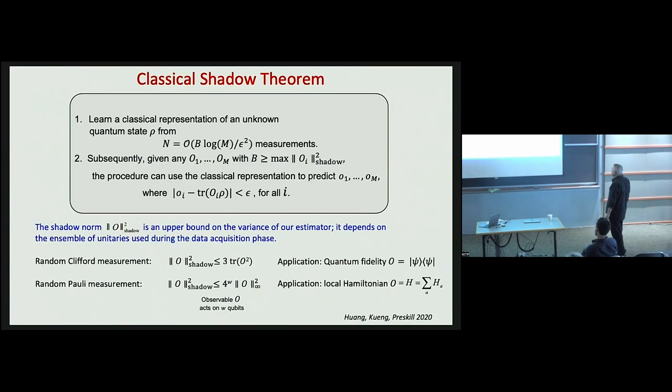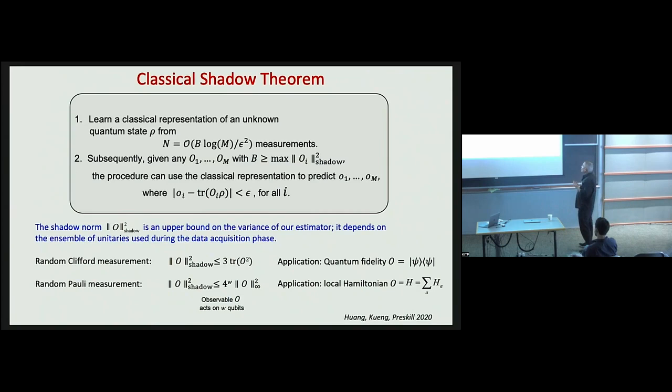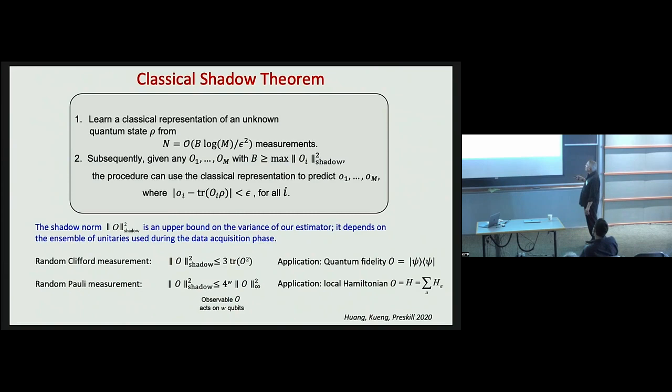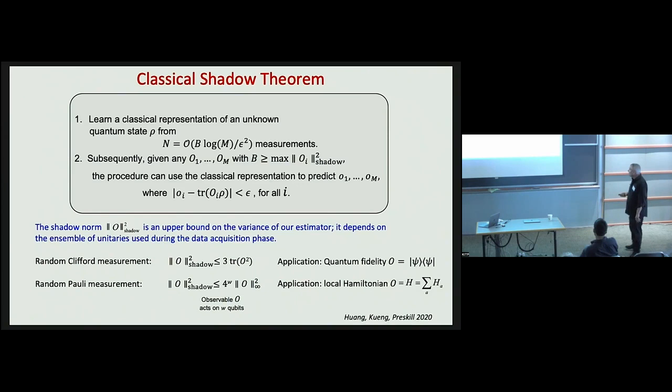An example of an operator whose Hilbert-Schmidt norm is a constant independent of system size is the projection onto some pure state. In this case, if we collect capital N inverted snapshots, then using those with classical processing we can predict the fidelity of the input state with a number of pure states which is exponential in the number of samples measured. If each of those pure states can be described succinctly classically, we can do so with efficient classical processing.